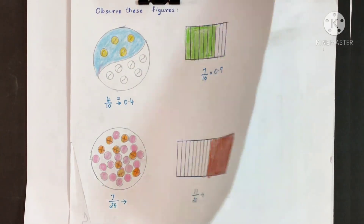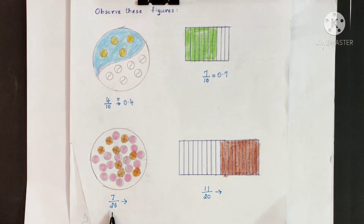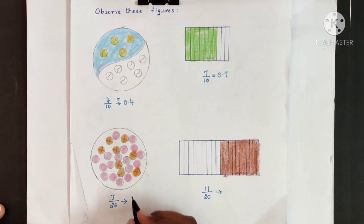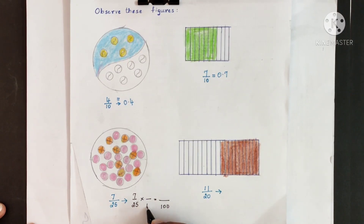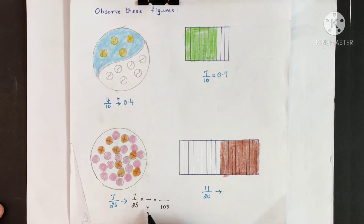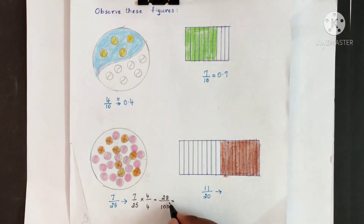Now convert 7 25ths to the fraction having 100 as the denominator, because here we cannot have 10 as the denominator since 25 is greater than 10. So first you have to convert 25 to 100. How do you get 100 in the denominator? You have to multiply 25 by 4. So 25 times 4 gives you 100. When you multiply the denominator by a number, the numerator also has to be multiplied by the same number. So multiply 7 by 4 — 7 fours are 28. So the decimal fraction of 7 25ths is 0.28.